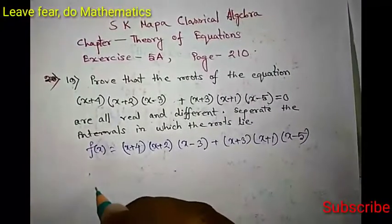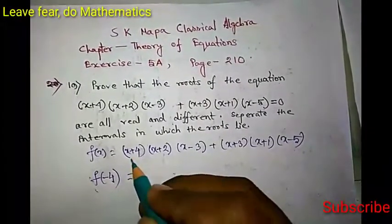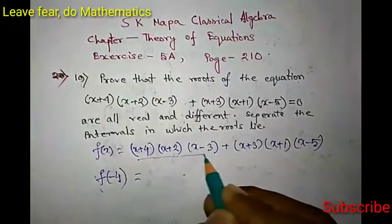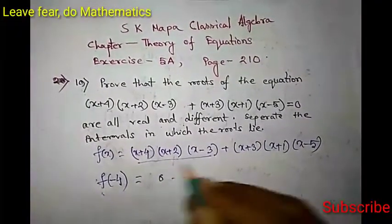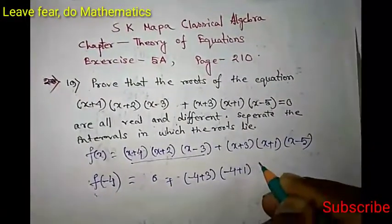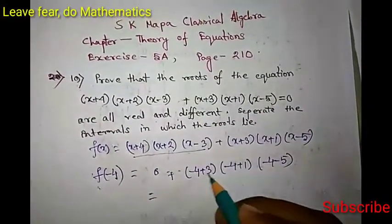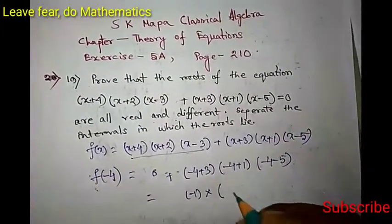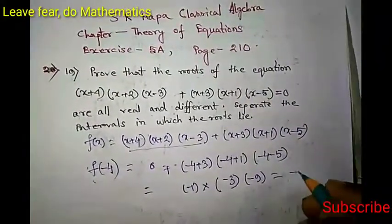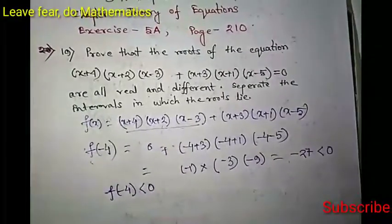Let us calculate f(-4). If we put x = -4, then the term (x+4) becomes 0, so the whole first product becomes 0. We are left with (-4+3)(-4+1)(-4-5) = (-1)(-3)(-9) = -27. So f(-4) < 0.